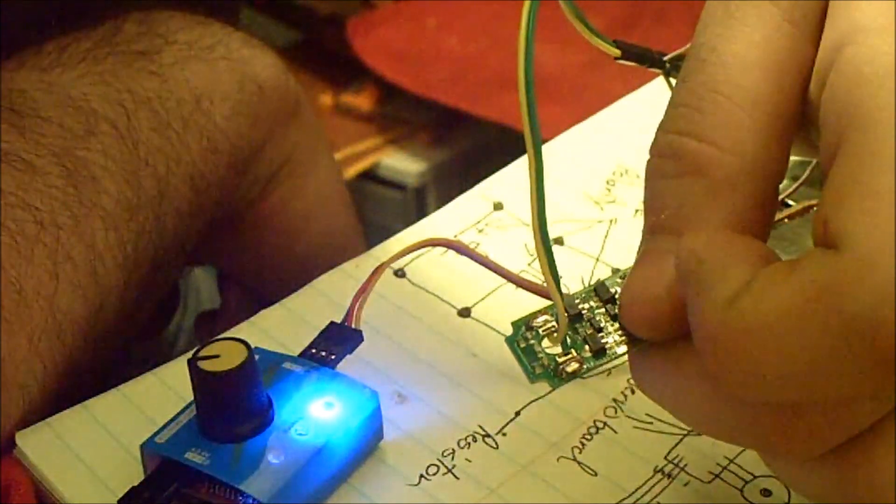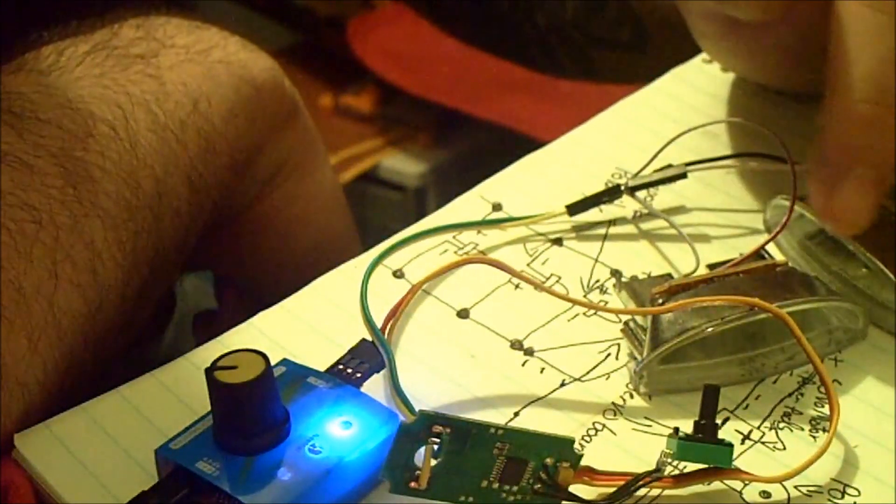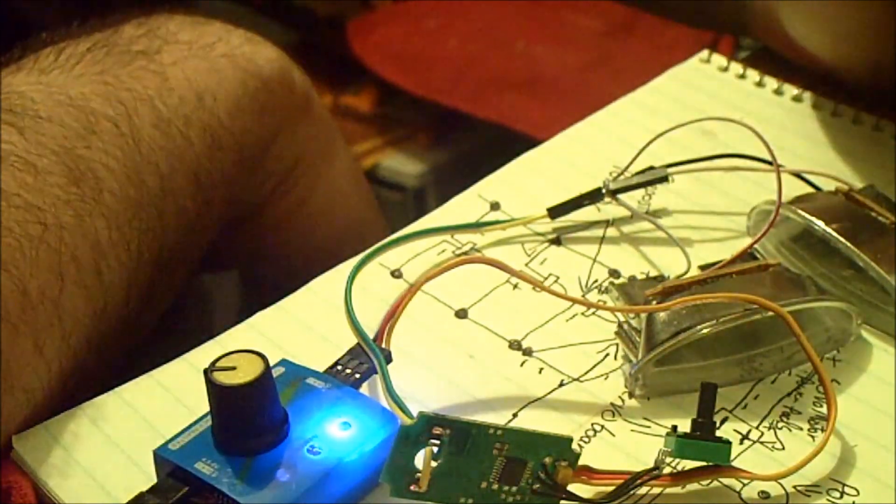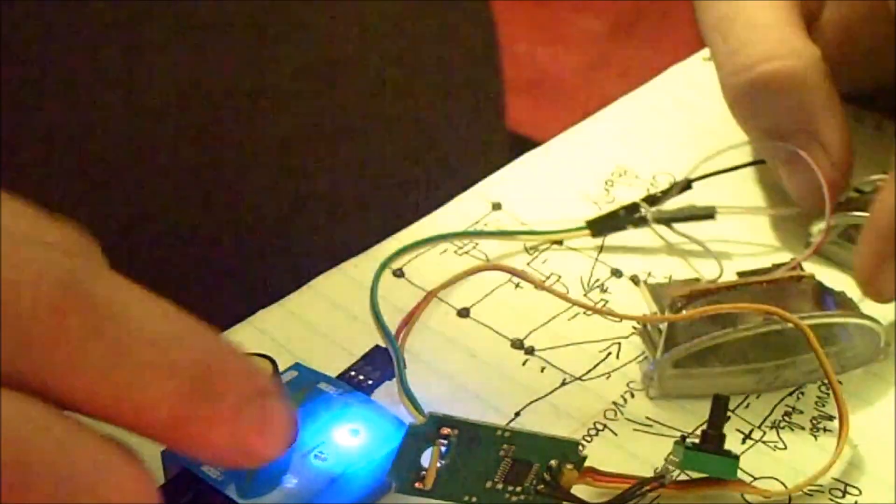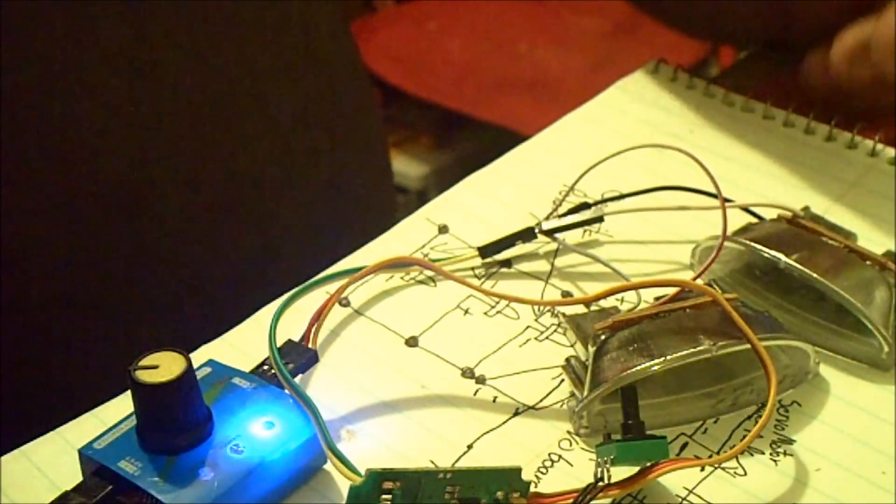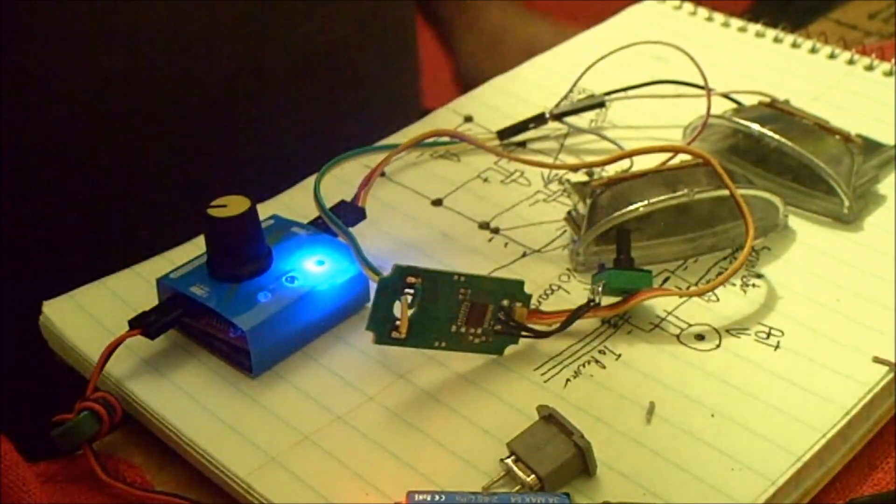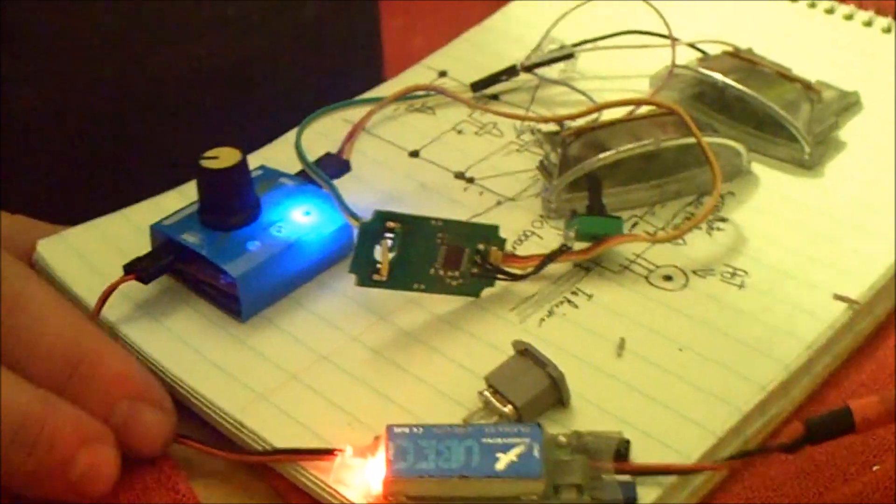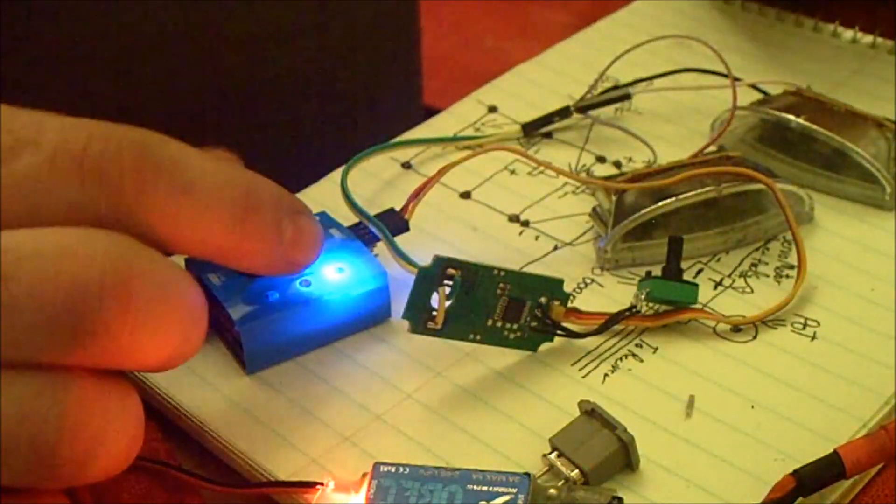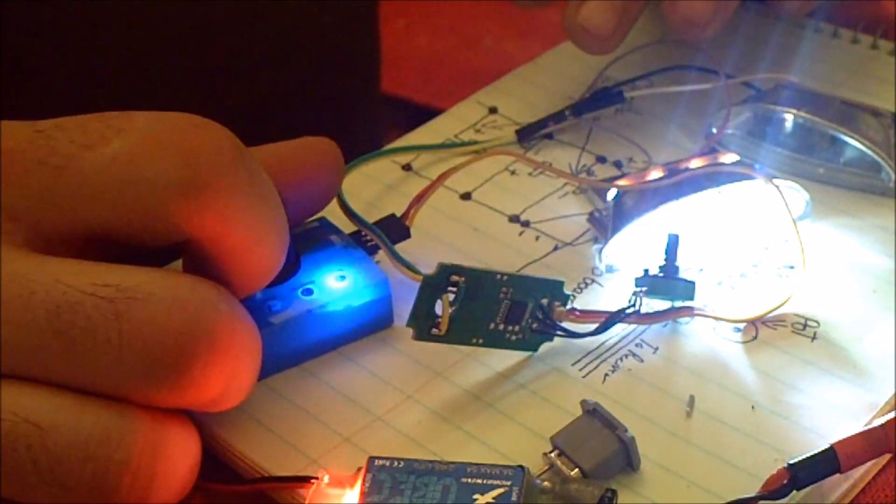These two things here were part of a flashlight. They're both five volts so I'm using them. Just to show you how it works, you can have this set up on a Y with your steering servo, or you can have it set up for brakes or however. Turn one way, one light comes on. Turn the other way, the other light comes on.